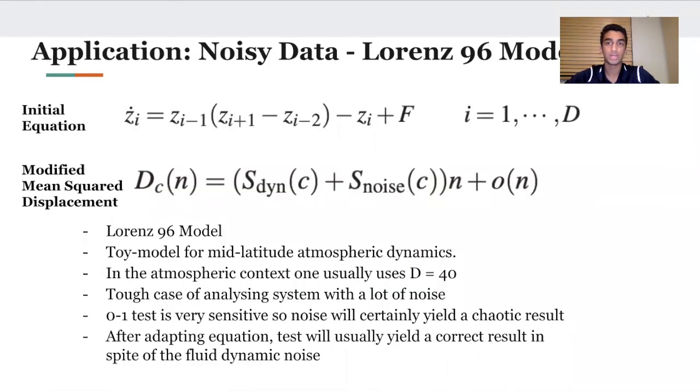Now let's focus on noisy data. For real world data, you get a fair amount of noise, especially in fluid dynamics. The problem is noise is stochastic, like the gas particles we saw earlier. If this test, which is super sensitive, picks up noise, every test is going to get a chaotic k value. What you can actually do is modify the mean squared displacement to account for the noise. This s_noise is our estimated value of noise, and we modify our mean squared displacement to account for it. In the paper that studied this, about 80% of the time, the test correctly assessed whether or not the underlying dynamics were chaos.